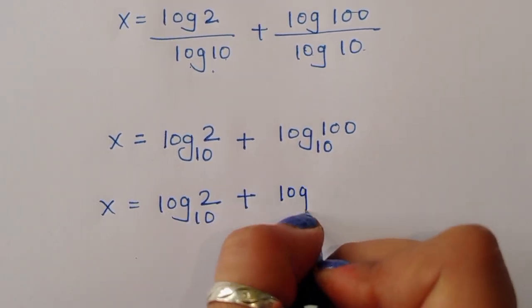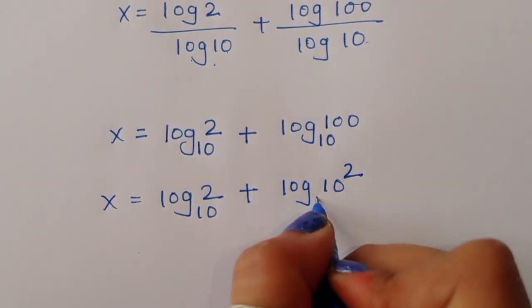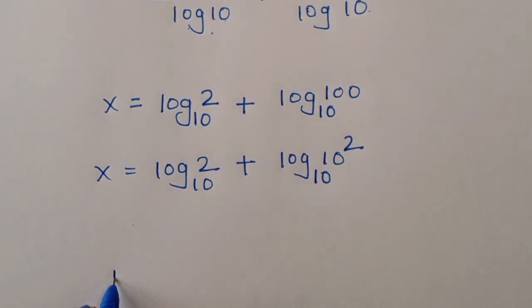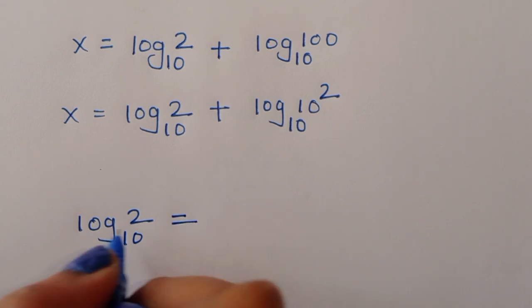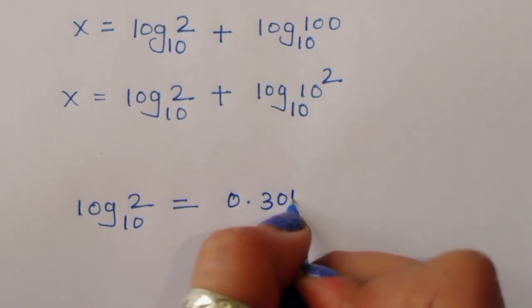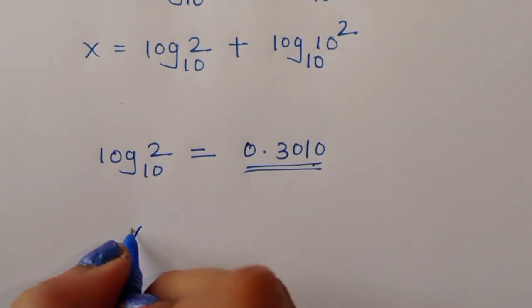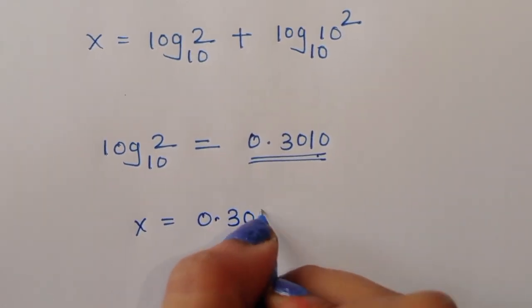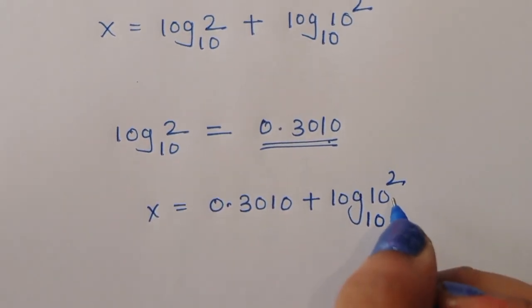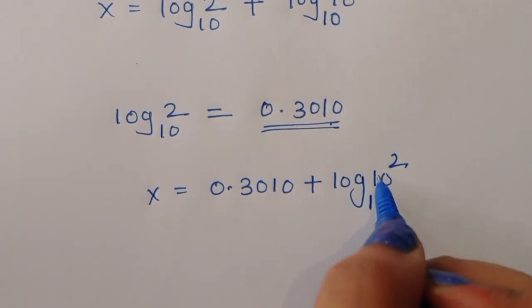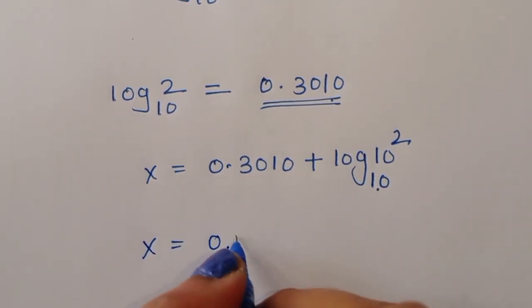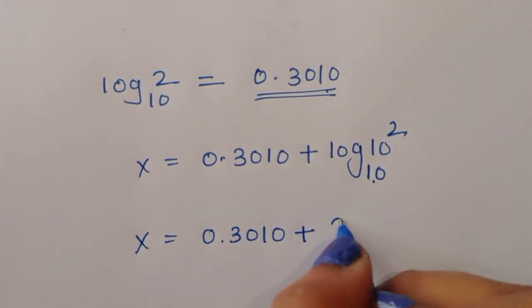We can write log(100) as log(10²). The value of log₁₀(2) is approximately 0.3010. So x = 0.3010 + log(10²) to the base 10.